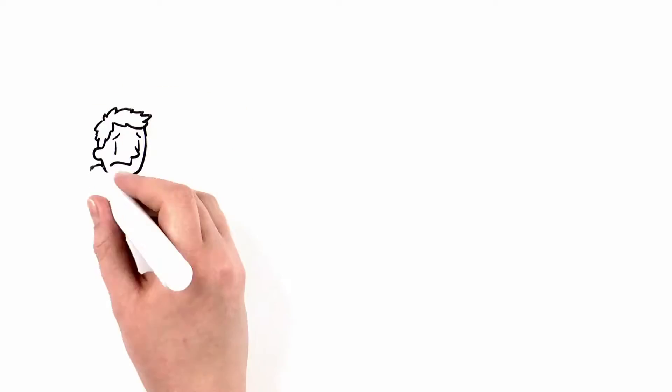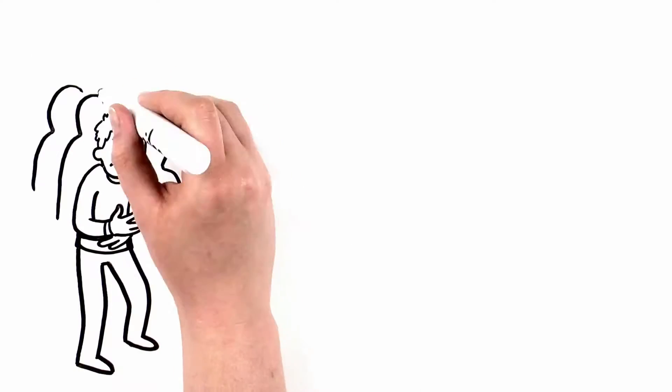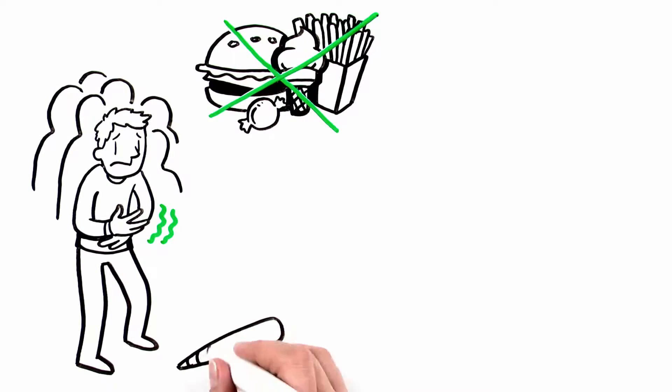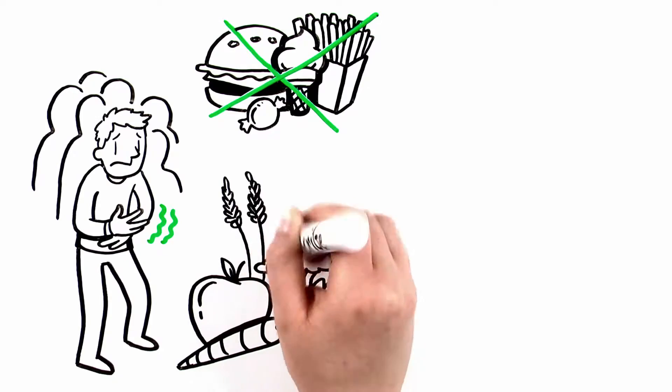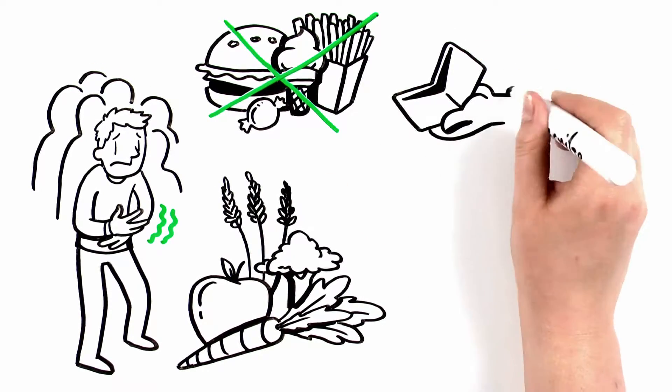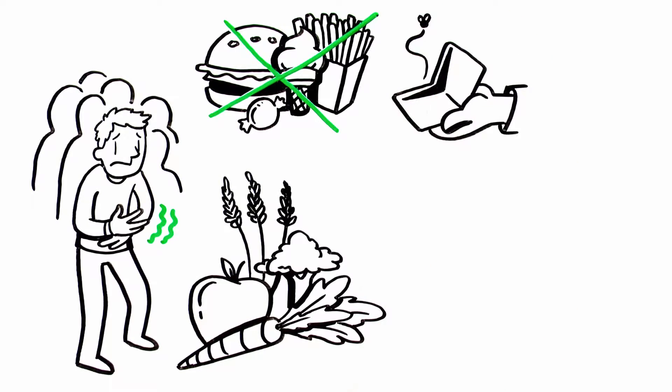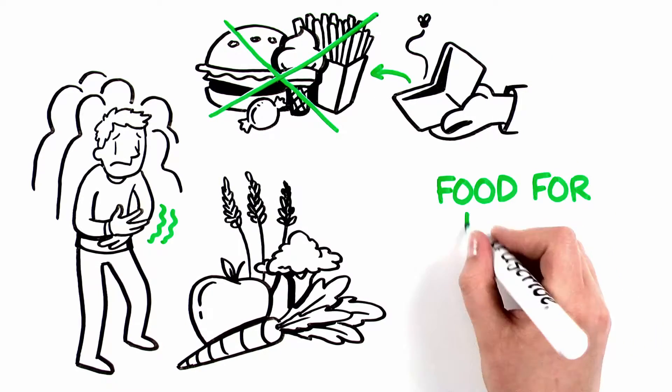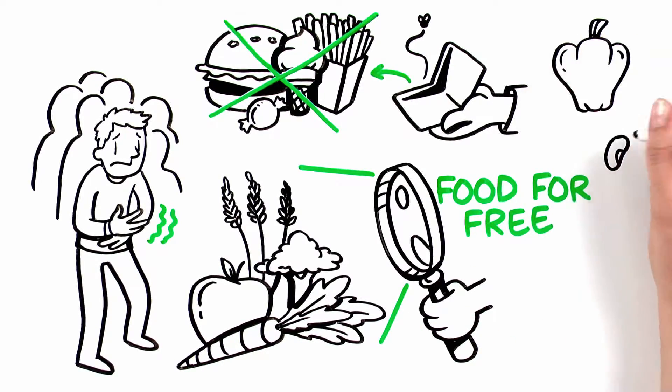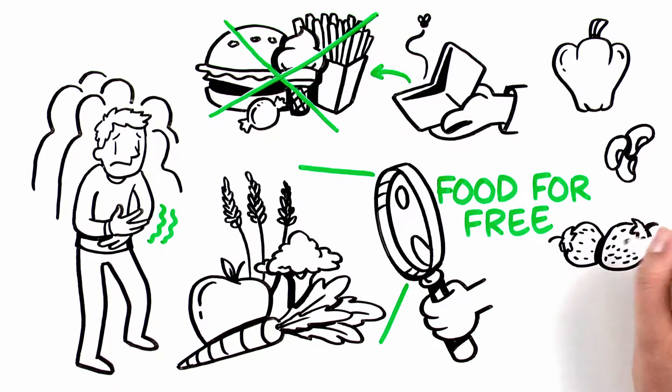Solving hunger in the U.S. is less about getting more calories into people and more about giving people consistent access to healthy foods. When faced with limited resources, people are forced to prioritize getting enough food over getting quality food. Food for Free focuses on fresh, healthy foods to help those with limited means to eat the same fresh, healthy foods you would choose for your own family.